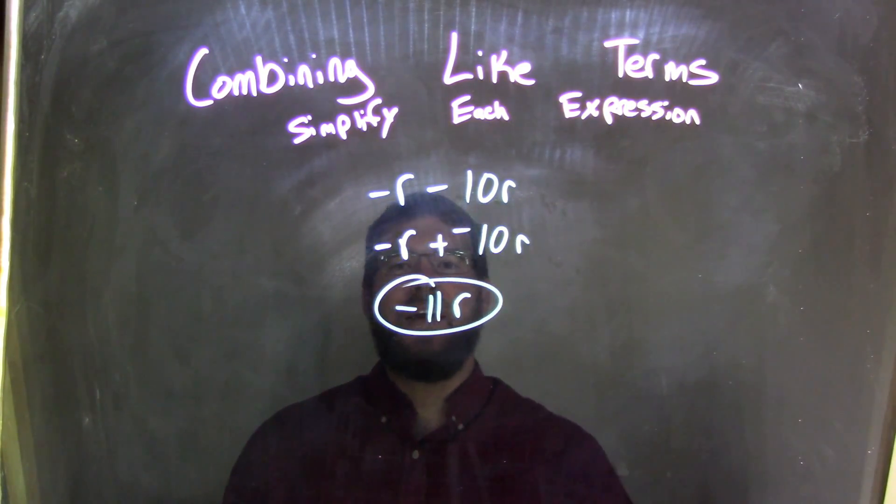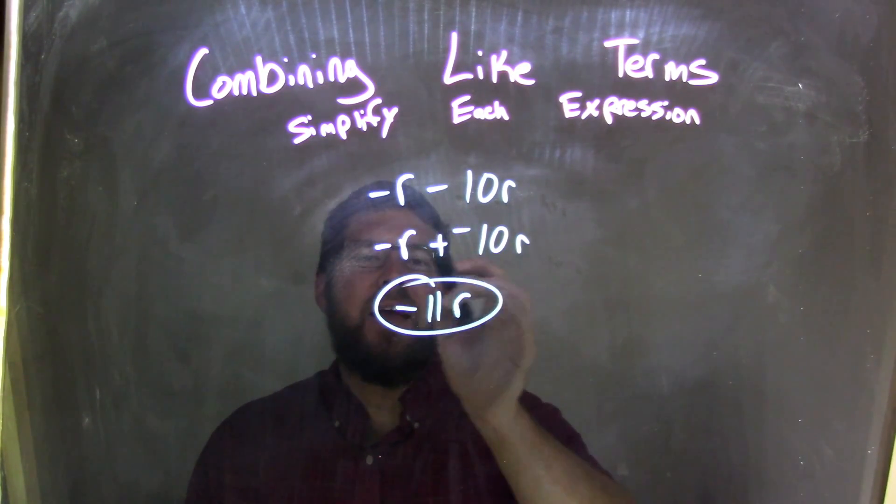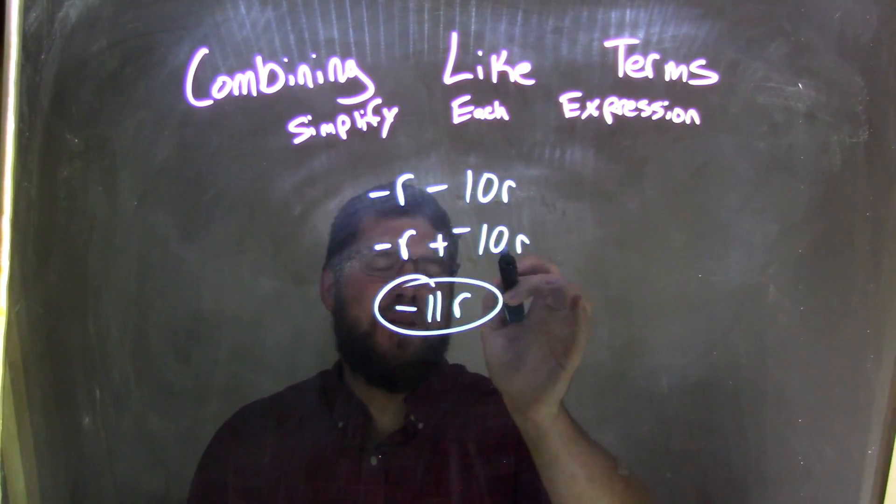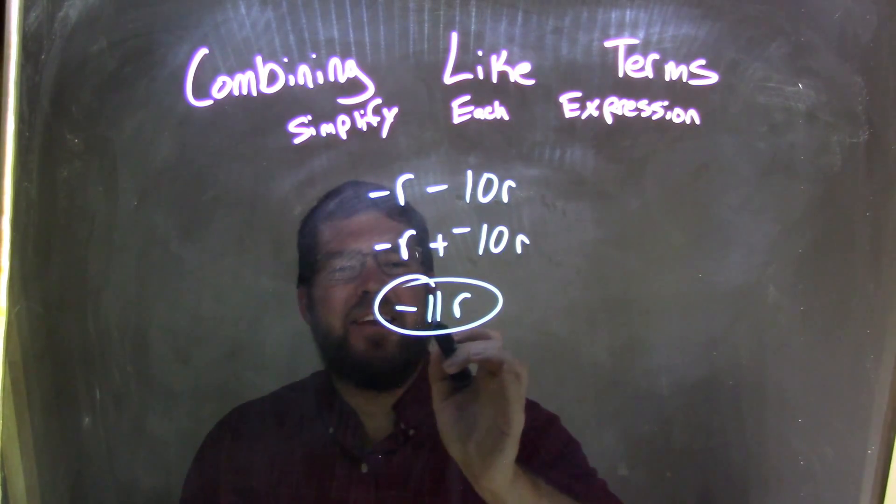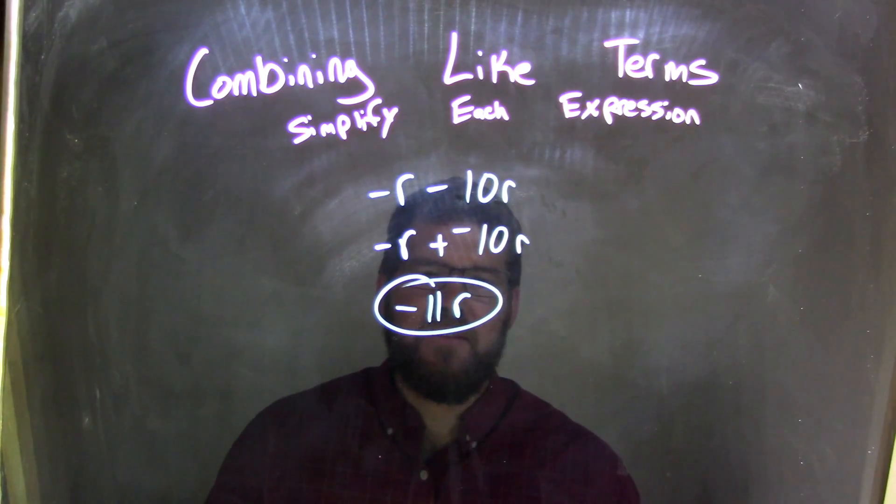So, again, let's recap. We started with negative r minus 10r. Subtracting 10r is the same thing as adding a negative, so negative r plus a negative 10r. We rewrite that as plus a negative. Now, negative 1r plus a negative 10r, when we add them together, is negative 11r, which is our final answer.